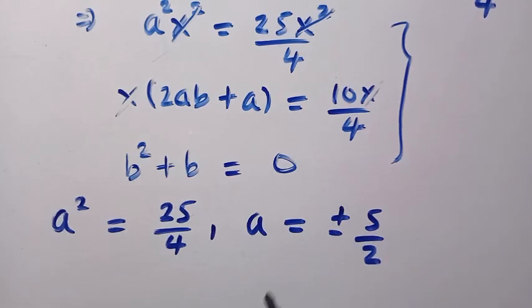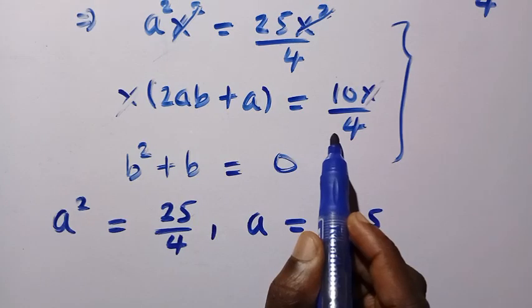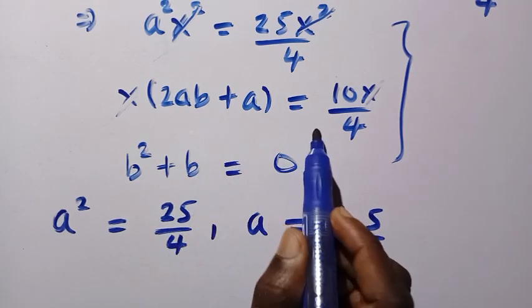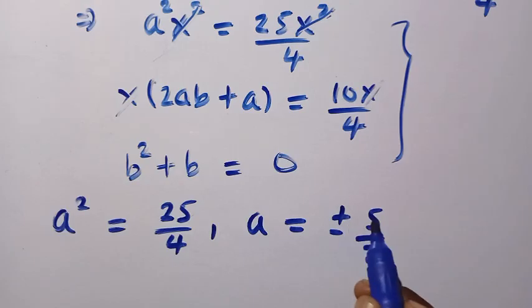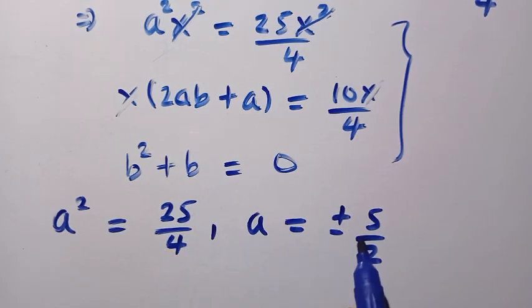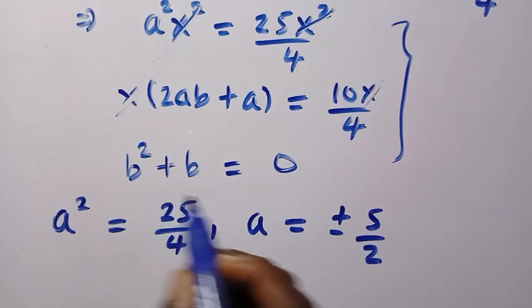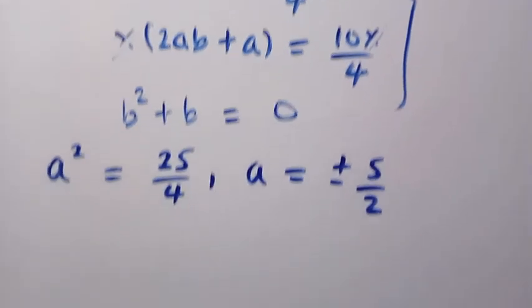And to get b, we have two possibilities. We can get b from here, or we can also get b from this. So to get b from here, we have to keep substituting the value of a at plus 5 over 2 and the value of a at minus 5 over 2. Then we get the value of b. But to make it easy, let's consider the last one here.